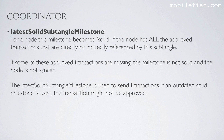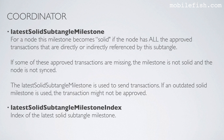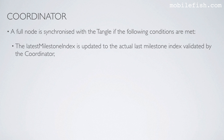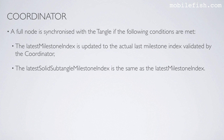The latest solid subtangle milestone is used to send transactions. If an outdated solid milestone is used, the transaction might not be approved. The latest solid subtangle milestone index is the index of the latest solid subtangle milestone. A full node is synchronized with the tangle if the latest milestone index is updated to the actual last milestone index validated by the coordinator, and the latest solid subtangle milestone index is the same as the latest milestone index.